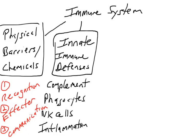The themes we saw over and over were recognition — how do immune cells or immune proteins recognize a pathogen and distinguish it from self, non-self versus self. Once recognized, how do you clear that pathogen? How do you activate the immune system to attack? And there was also cell-to-cell communication via cytokines and chemokines, so that one cell can tell another cell what to do.